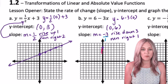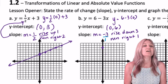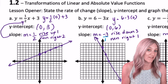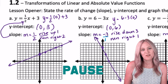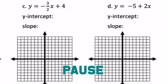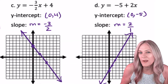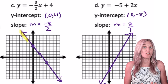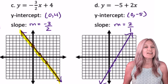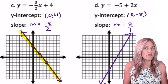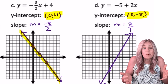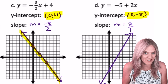Your turn to graph the next two of the linear function family. Quick check: C has a negative slope, so your line should be decreasing or falling from left to right. And on both of them, did you write the y-intercept as a point? Because it is a point and the x value is zero.